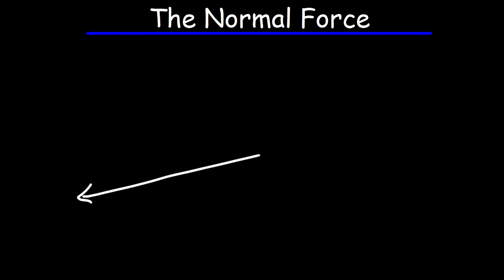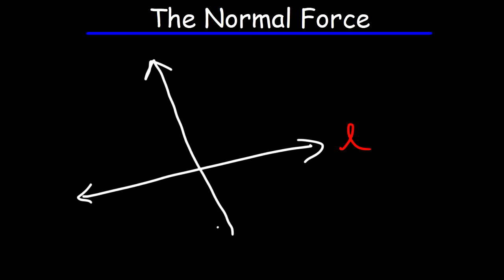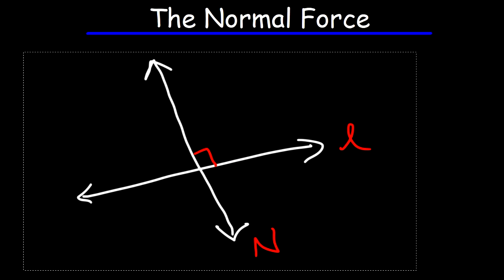What exactly is a normal force? In math, you may have heard of a normal line, just as you heard of a tangent line. A normal line is a line that is perpendicular to another line — it forms right angles with it. So the normal force must be a force that is perpendicular to something.